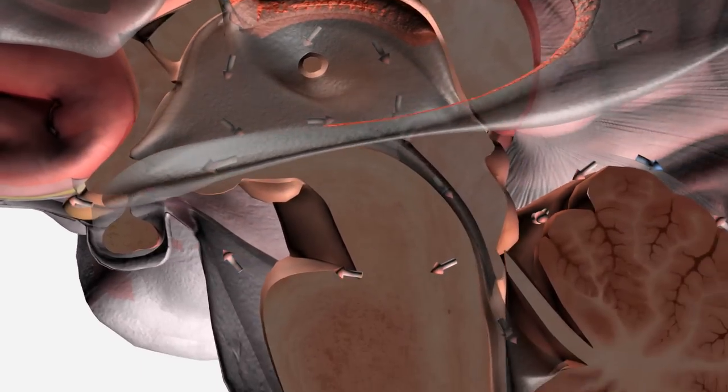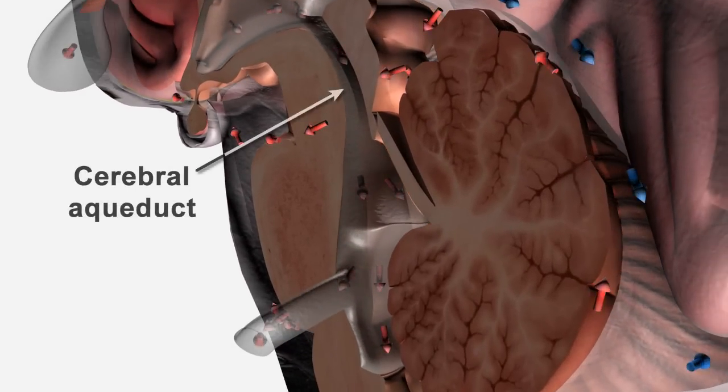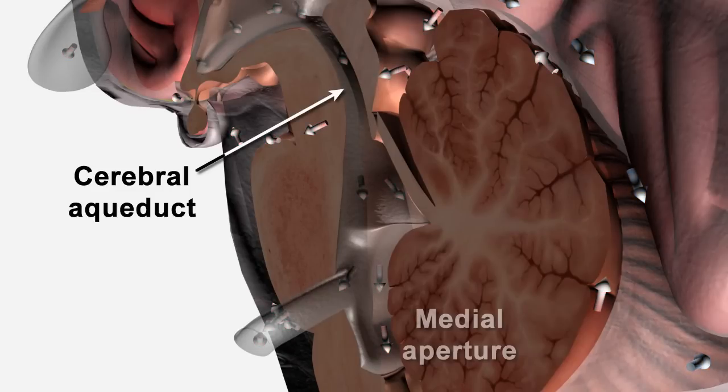CSF then flows to the fourth ventricle via the cerebral aqueduct, exiting via the medial and lateral apertures.